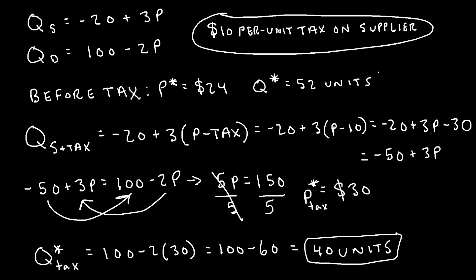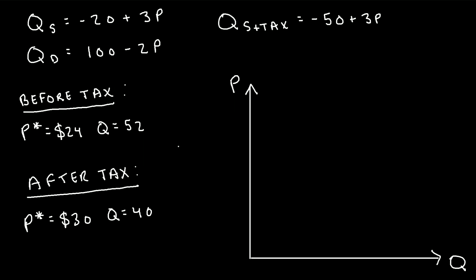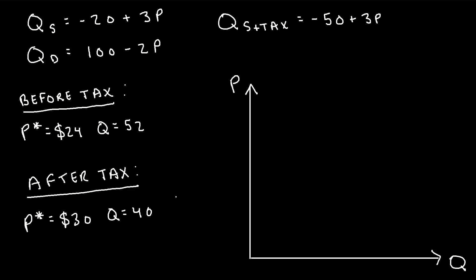We can see that the number of units decreased from the original market equilibrium quantity. To summarize: before the tax, the equilibrium price and quantity were $24 and 52 units. After the tax, the new equilibrium price and quantity are $30 and 40 units. Let's go ahead and visualize these results.